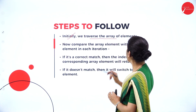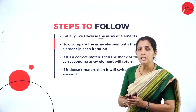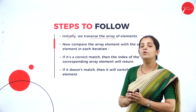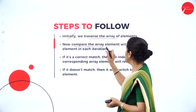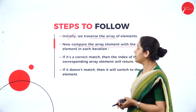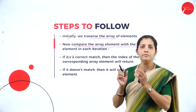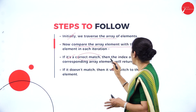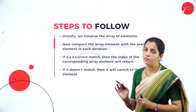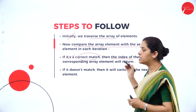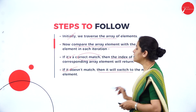The steps to perform linear search are as follows. Initially, compare the key with each and every element of the array. Compare the array element with the search element. If it is a correct match — that is, if the key is found — return the corresponding index. If the key is not found, return 0. If the key does not match the current element, switch to the next element and continue.